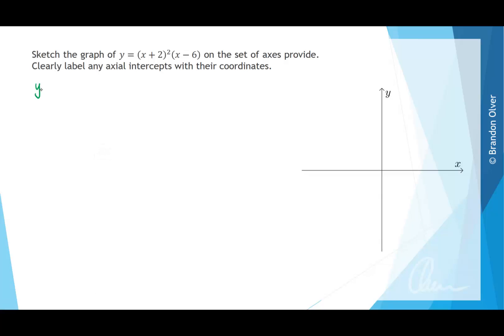The first thing we can do is find the y-intercept of this graph, and we know that happens when x equals 0. So in the equation we're going to have y equals, and wherever there's an x we replace it with 0, so it'll be (0+2)² times (0-6). If we evaluate that, 2 squared is 4, and 4 times negative 6 is negative 24. So the coordinates of the y-intercept are at (0, -24).